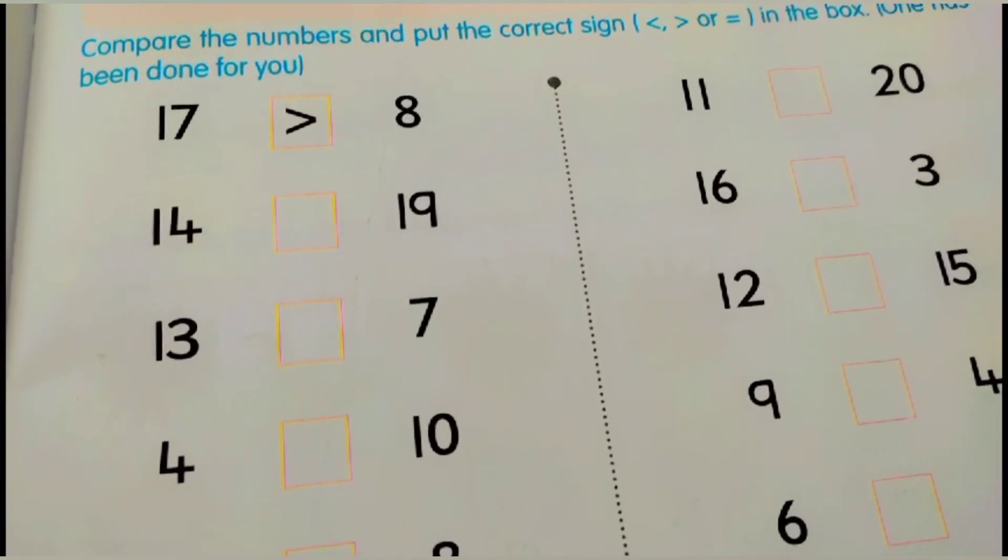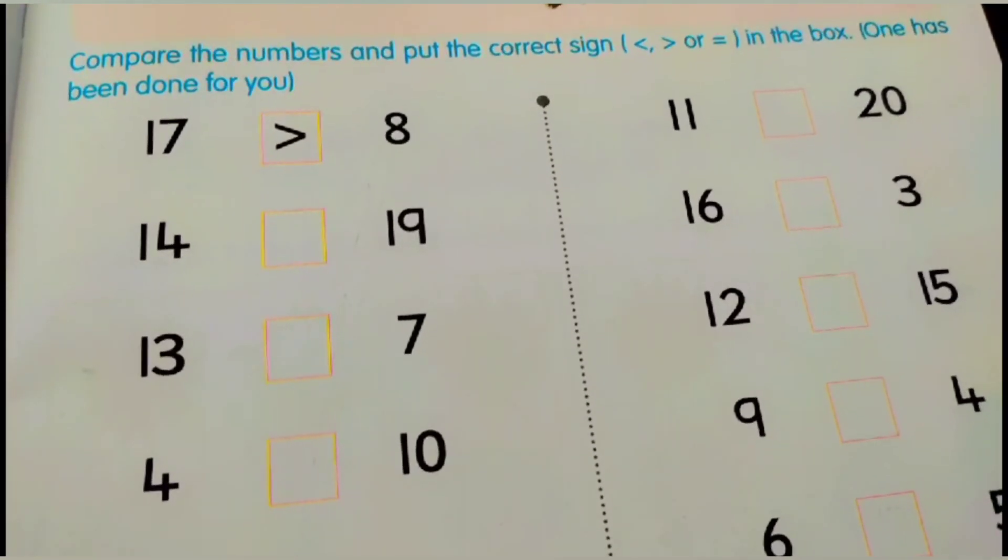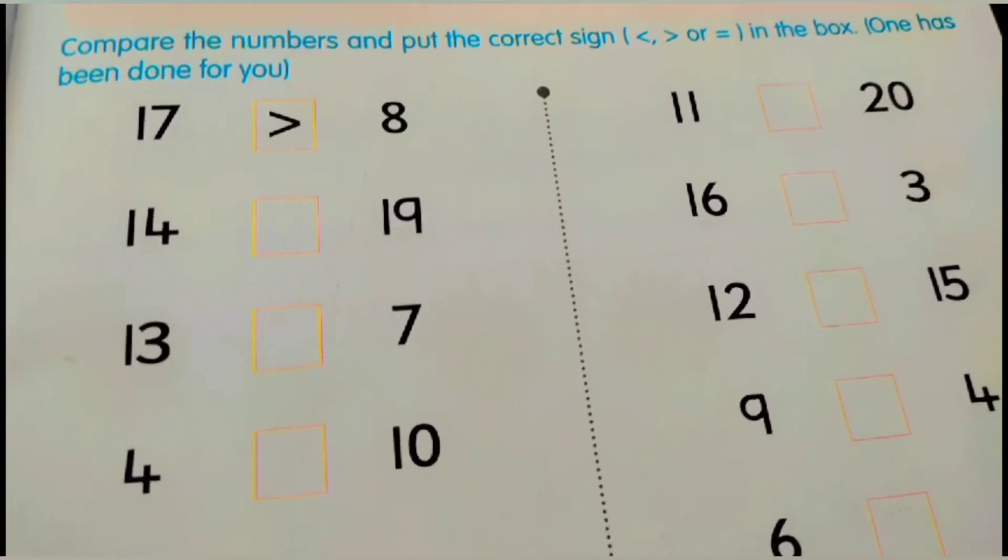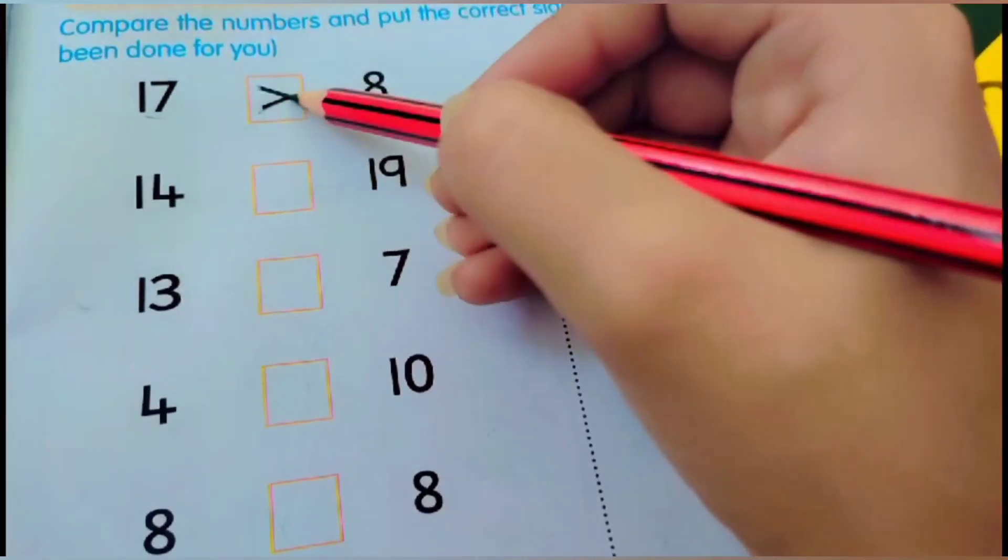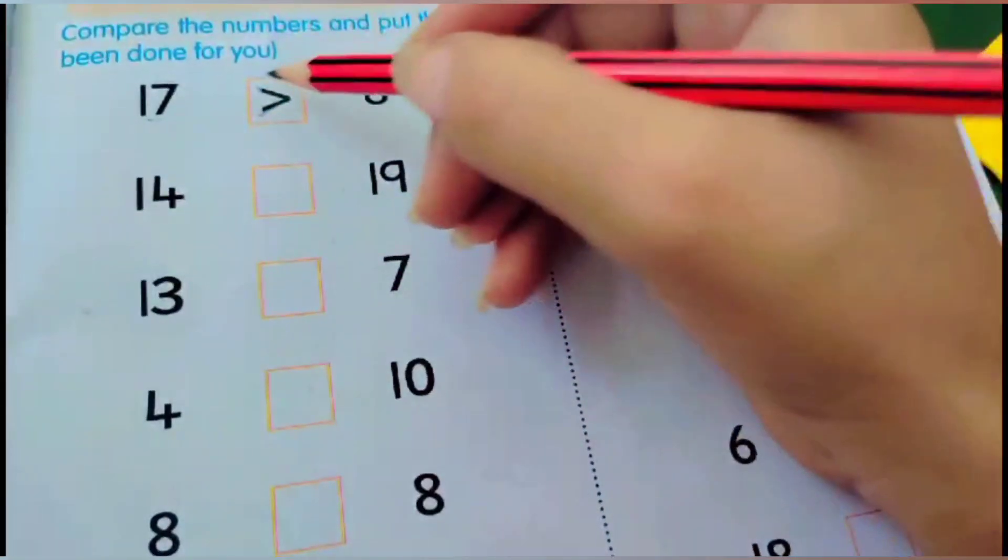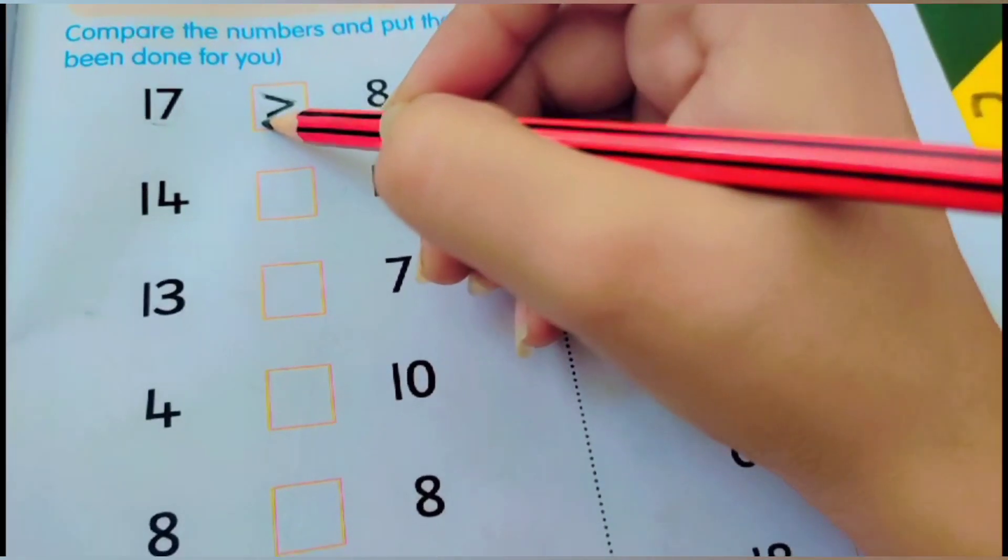Our worksheet is compare the numbers and put the sign in the box. One has been done for you. 17, 8. Which one is greater? 17. So, we have to always open our hand. Open the mouth on the greater number.